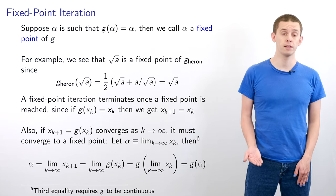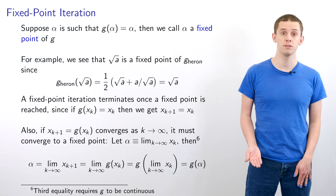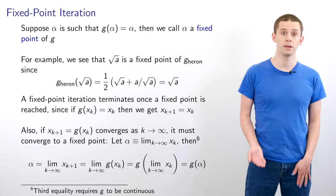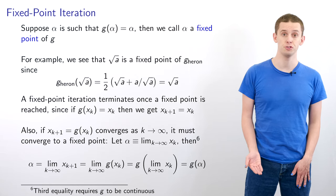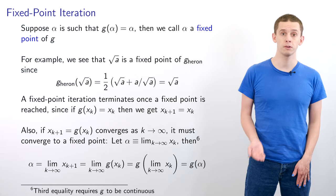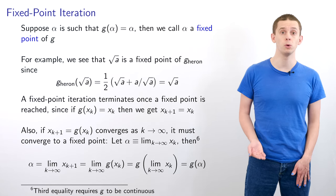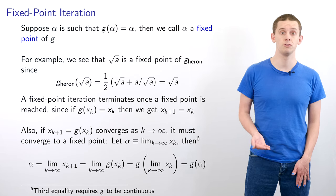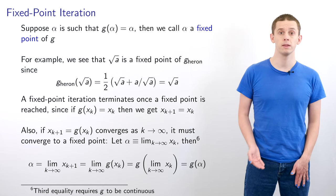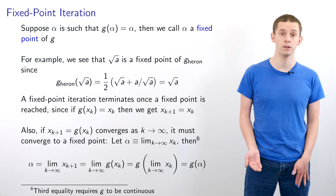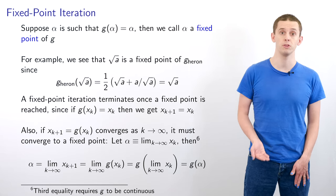Now suppose there's a value α such that g(α) = α; then we call α a fixed point of g. If we look at g_Heron, we can see that the square root of a will be a fixed point: g_Heron(√a) = (1/2)(√a + a/√a), which evaluates to √a.